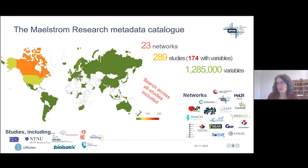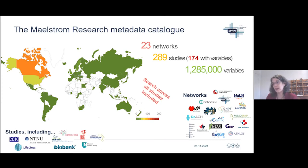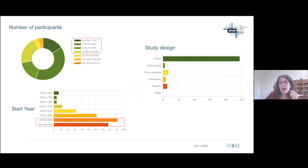In Sweden, Cohort Sweden is doing exactly the same exercise as Switzerland — documenting all studies in the country. We are trying to do the same for Canada. In other countries it's more network-based; for example, MindMap was interested in aging and urban environment and had 14 studies across different countries that we helped document. The distribution of studies in the Maelstrom catalog shows the majority have fewer than 50,000 participants, the majority are cohorts, and most started relatively recently.